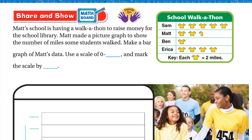Now for the Share and Show section. Matt's school is having a walkathon to raise money for the school library. Matt made a picture graph to show the number of miles some students walked. We need to make a bar graph of Matt's data. Each picture or chart symbol represents two miles. Counting Sam's symbols: 2, 4, 6, 8, 10 — Sam walked 10 miles.